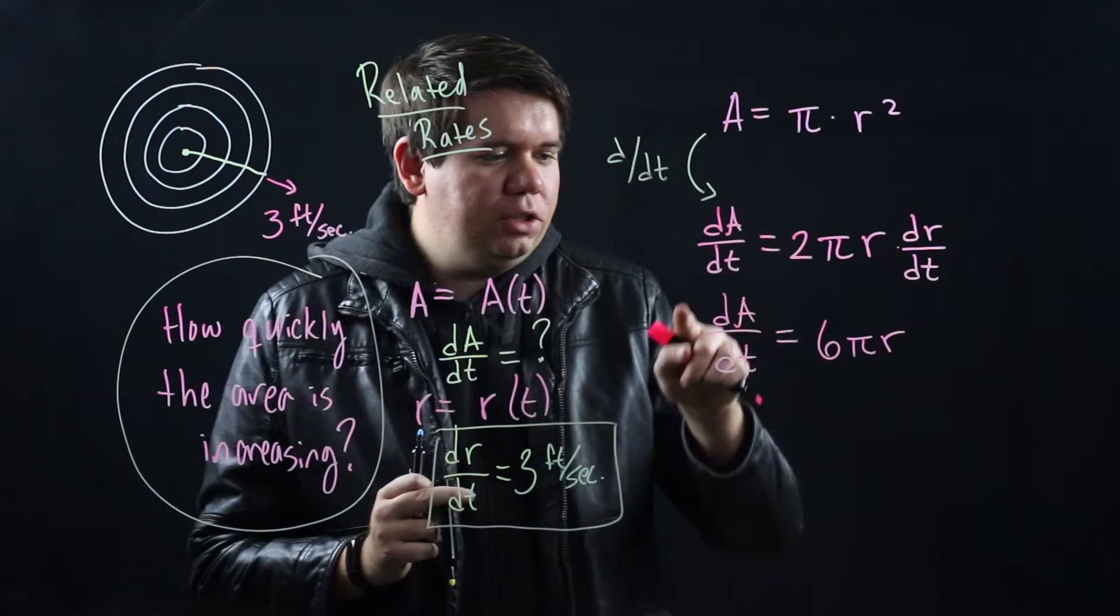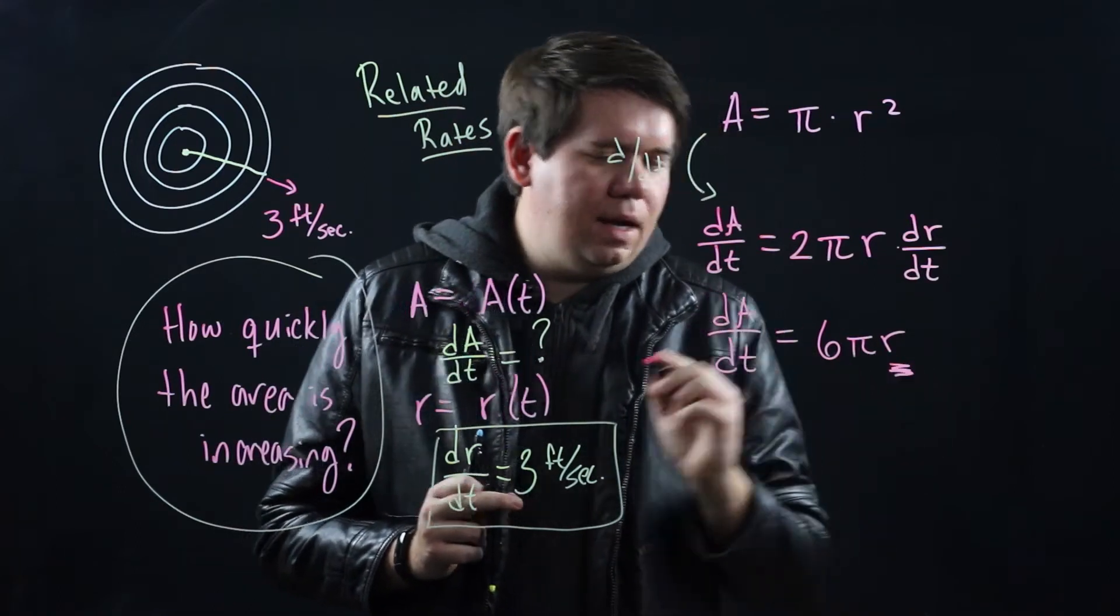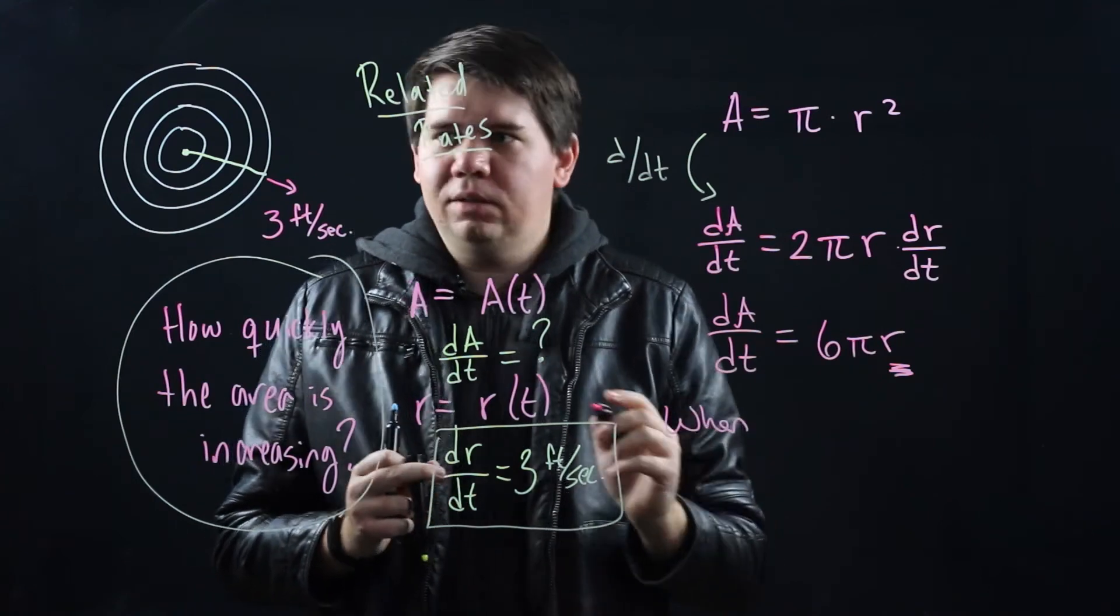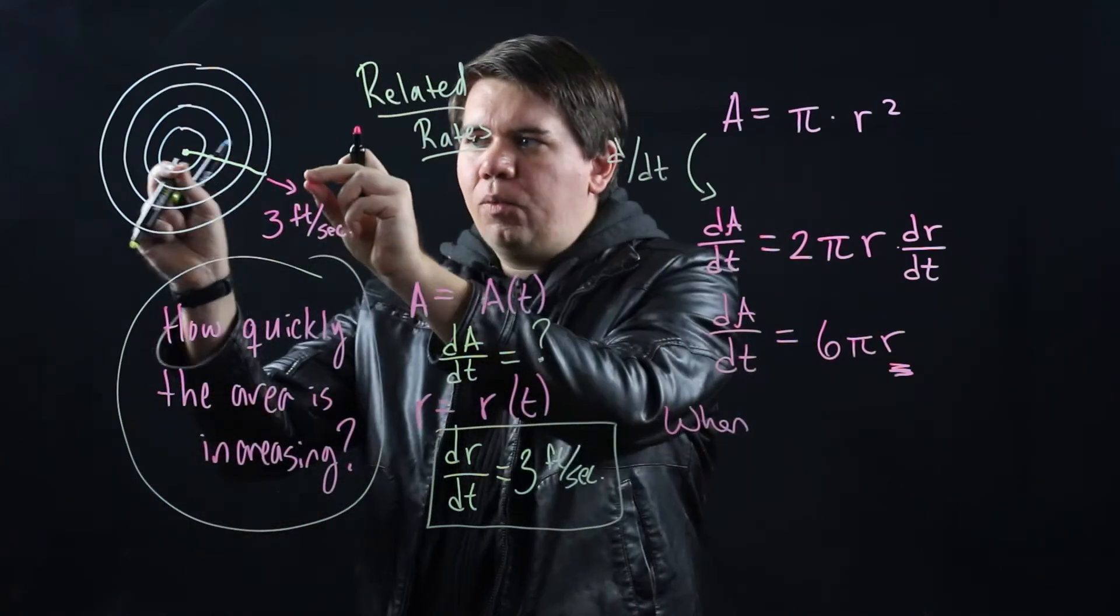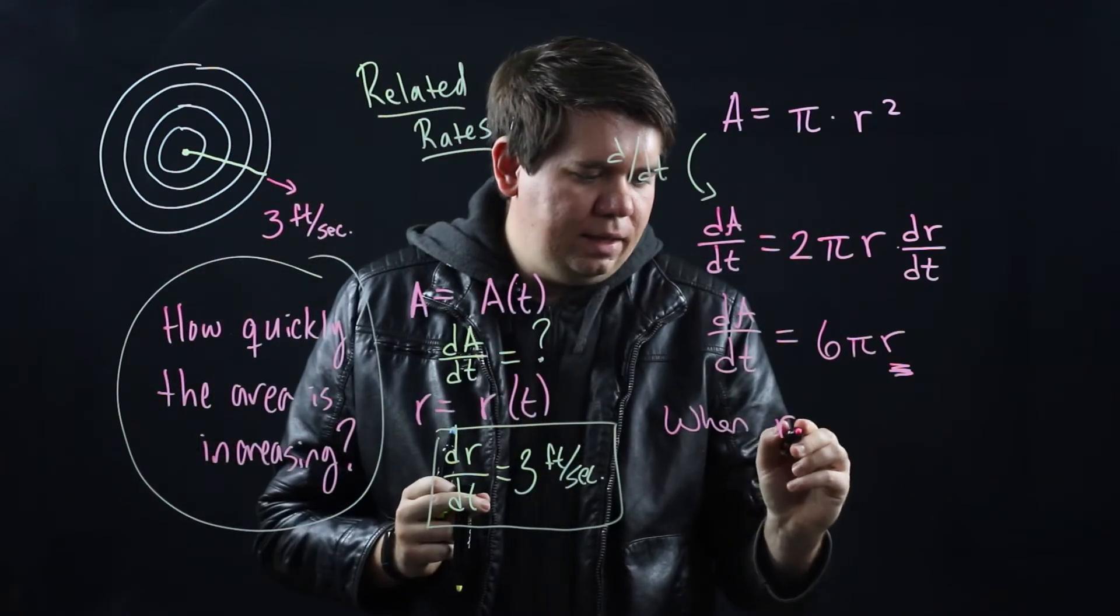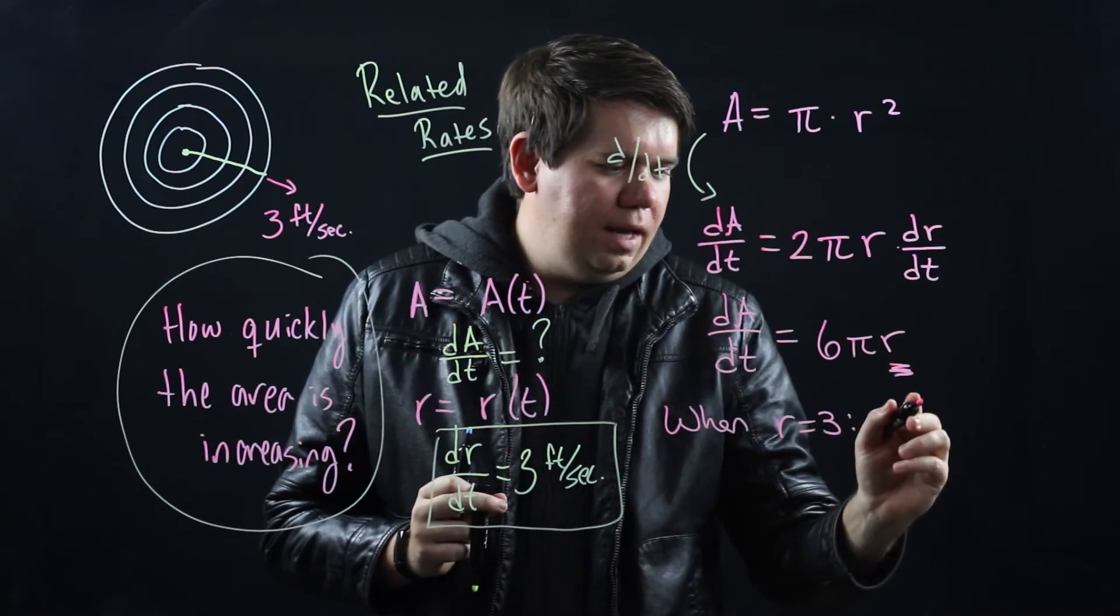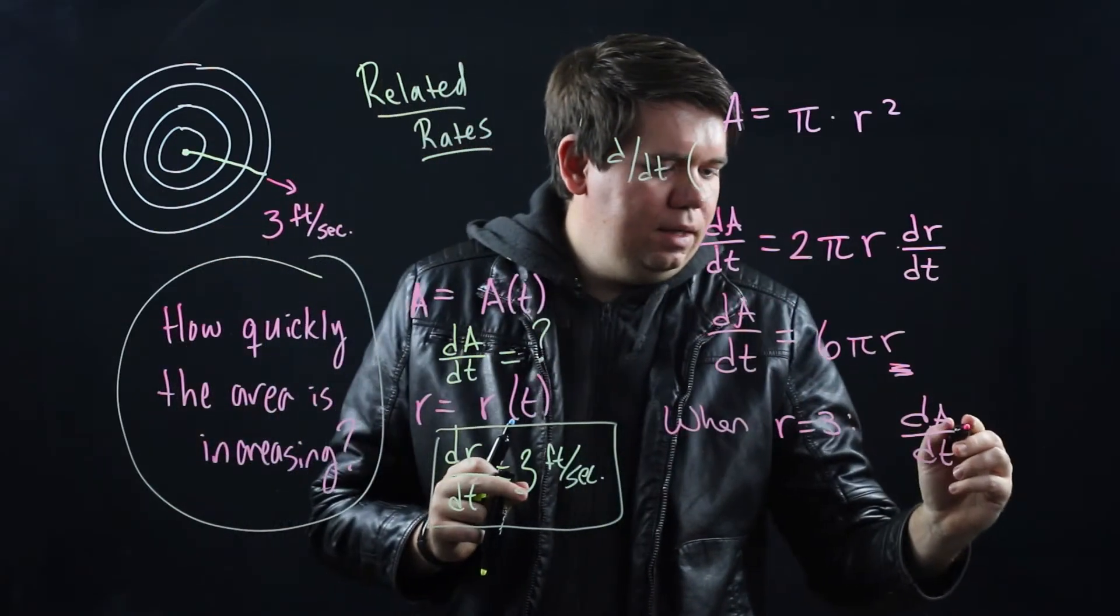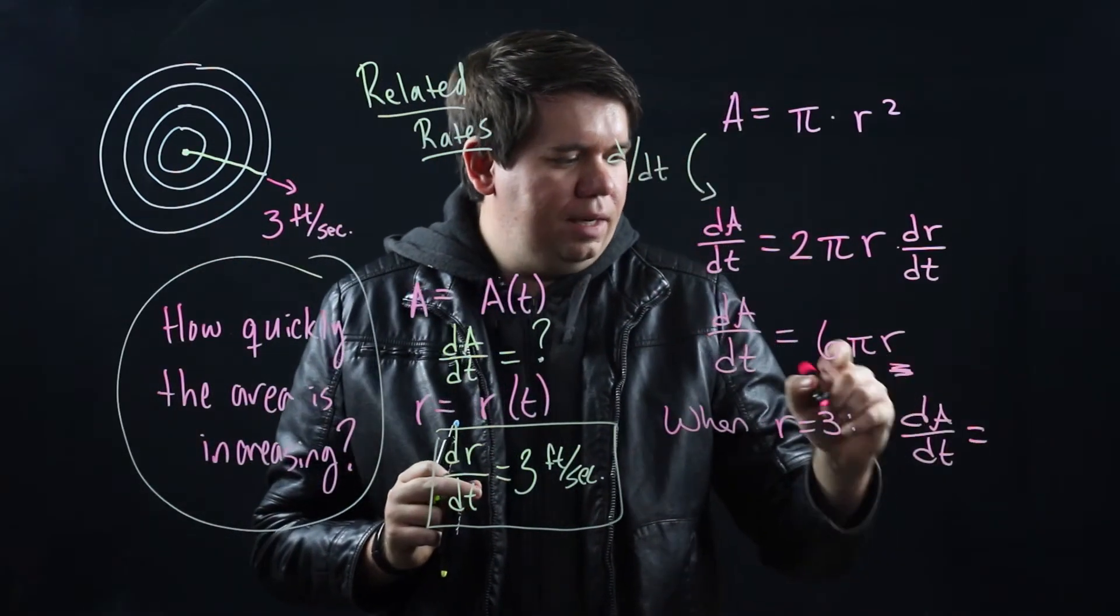Notice the change in area depends on your radius. For example, when your radius is say at 3 feet, so after one second, when the radius equals 3, you would have that your dA/dt, your change in area over time would be, plug in a 3 for your radius, it would be 18π.